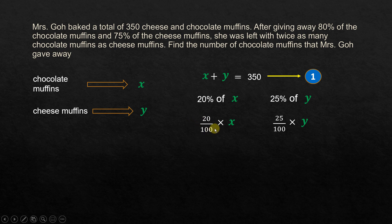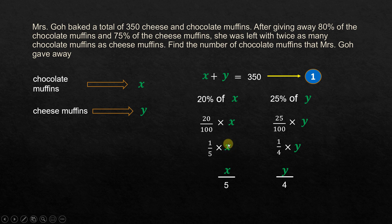20 times 5 gives 100, so we can cancel to get 1/5 times X. And 25 times 4 gives 100, so that simplifies to 1/4 times Y. Further simplification gives X over 5 and Y over 4. These are the two simplified quantities. Now we need to apply the relationship: she was left with twice as many chocolate muffins as cheese muffins — X over 5 is the chocolate left, Y over 4 is the cheese left.